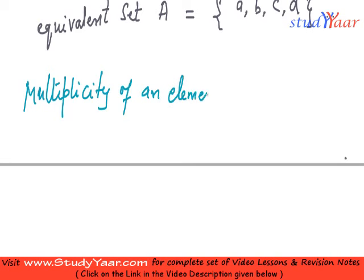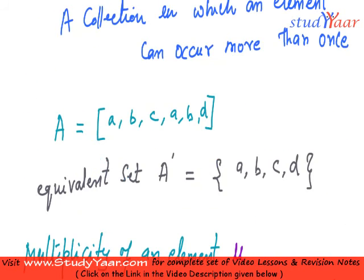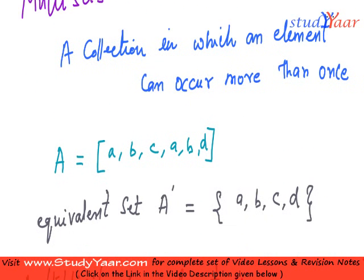Multiplicity of an element is simply the number of occurrences of that element in the multiset. Occurrences of the element in the multiset, it is denoted by mu. So, in this particular multiset, what is the multiplicity of a?